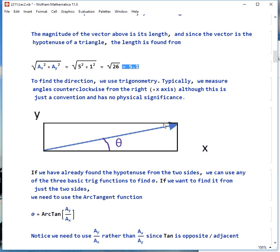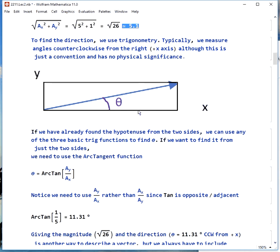To find the direction, we use trig. Since we have all three sides of the triangle now, we could really use sine, cosine, or tangent to find theta. But typically, we'll use tangent so that we can find this first, before we find the hypotenuse. The angles are generally measured counterclockwise from the right, or the positive x axis. This is just a convention, but it's the one I'm going to use.